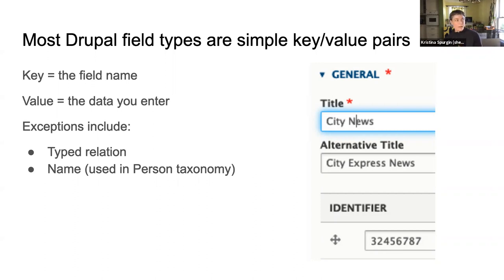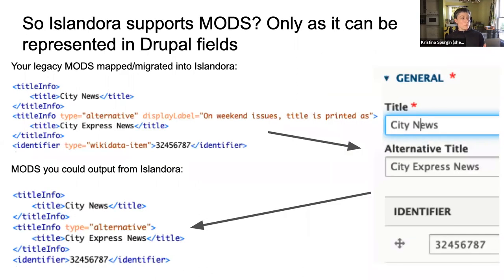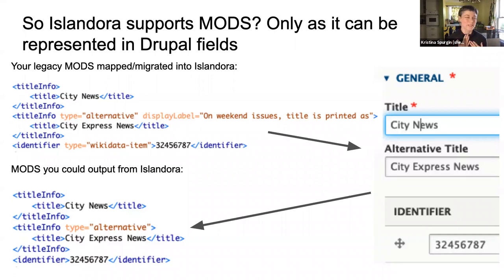What does this mean for your metadata? Basically, if you want to store metadata in Drupal, it needs to go into one of these fields. Most of these fields are simple key-value pairs — the typed relation and the name field are exceptions. The key is the field name, the value is the data that you enter, and they just go together simply like that. So how does this relate to the statement that Islandora supports MODS? Kind of, sort of, yes it does.